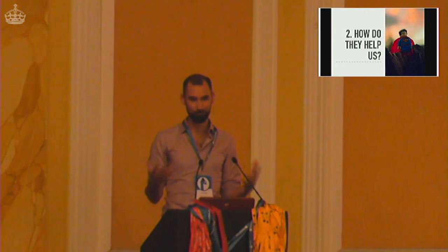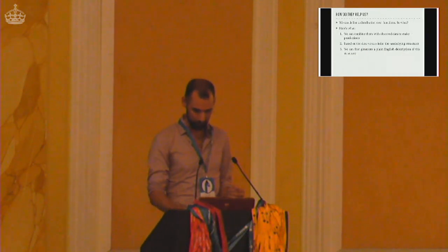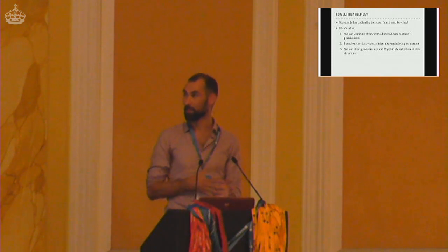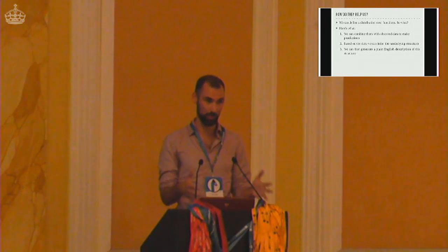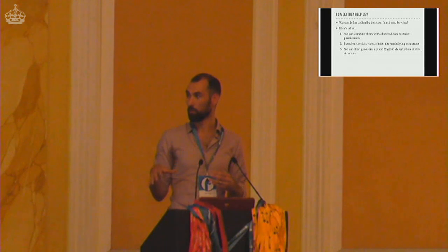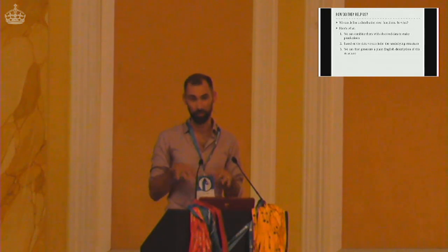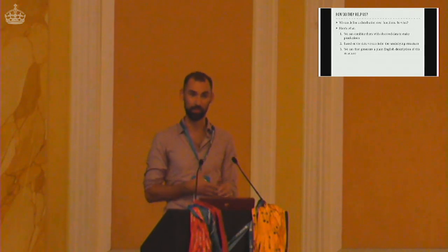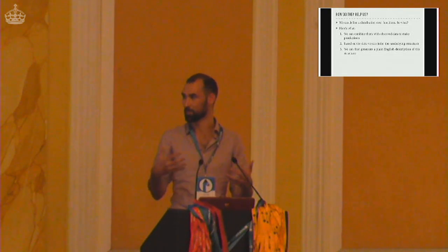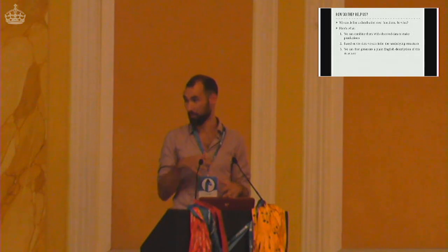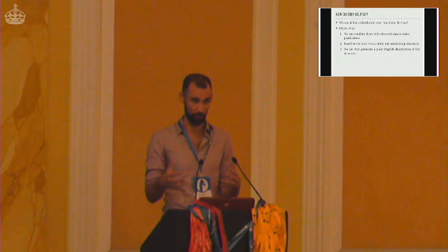So how does this actually help us? We can define a distribution over functions — so what? Well, we can combine them with observed data to make predictions in areas where we don't have data, for example in time series to make forecasts. Or, based on the data, we can infer what the underlying structure of the bag of time series is that this data was drawn from. And we can actually generate plain English descriptions of the structure that we find.